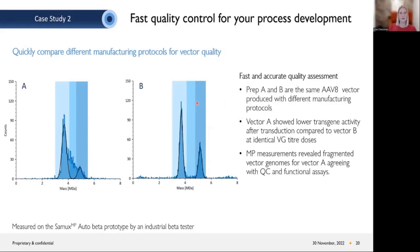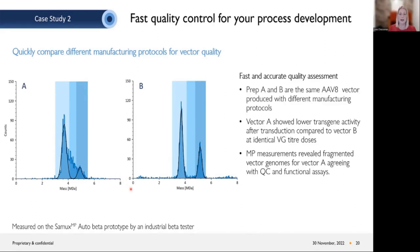A second case study from the same collaborator involves the same vector produced by two different manufacturing protocols. Vector A showed lower transgene activity after transduction compared to vector B at identical vector genome titers. When both samples were measured on the mass photometer, the reason became clear: production A showed a large amount of partials, whereas vector B was very clean. These mass photometry measurements are in line with the QC and functional assays they performed, but you can access this information very quickly — literally in minutes — during process development, allowing rapid comparison of two different approaches.